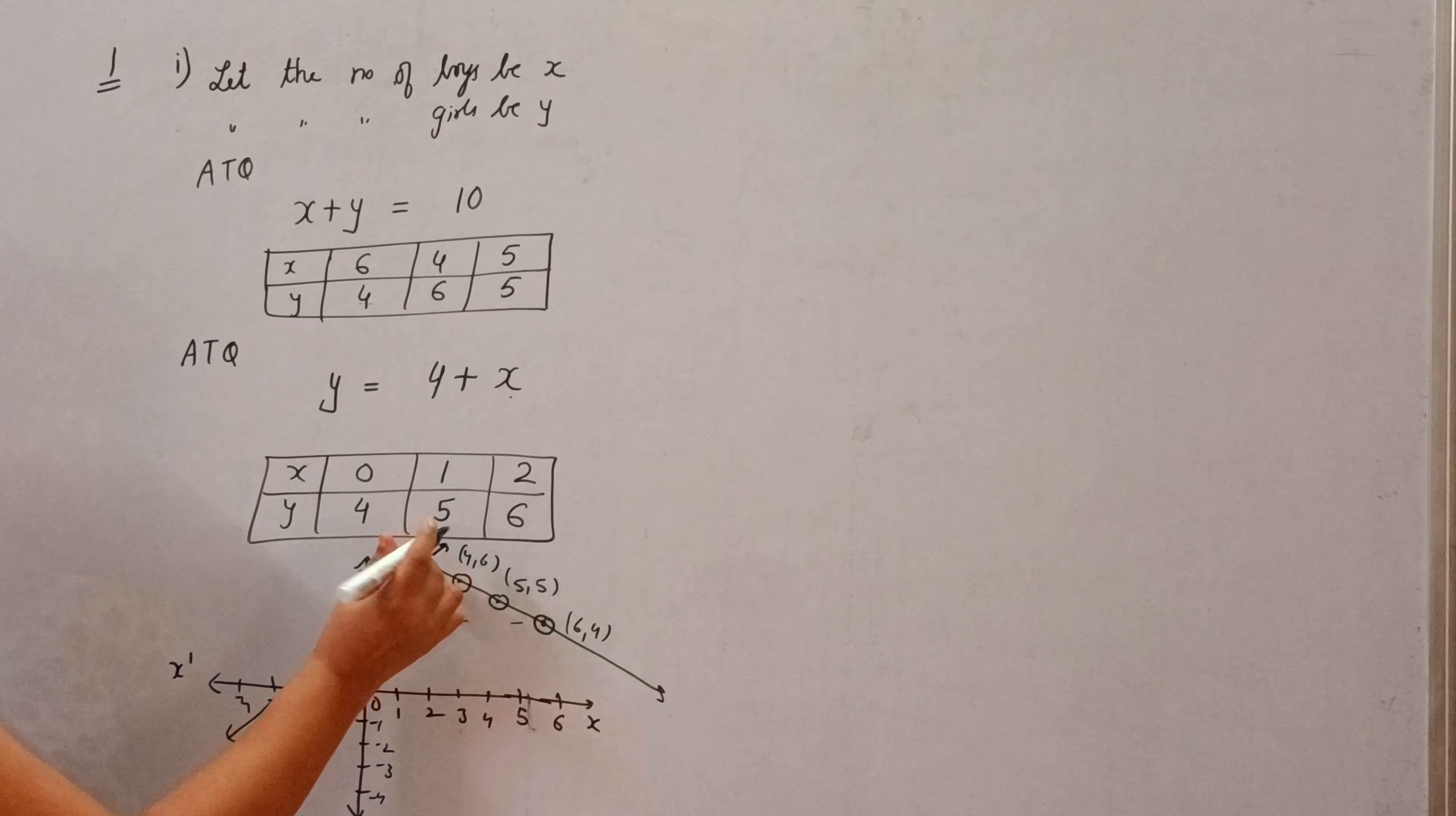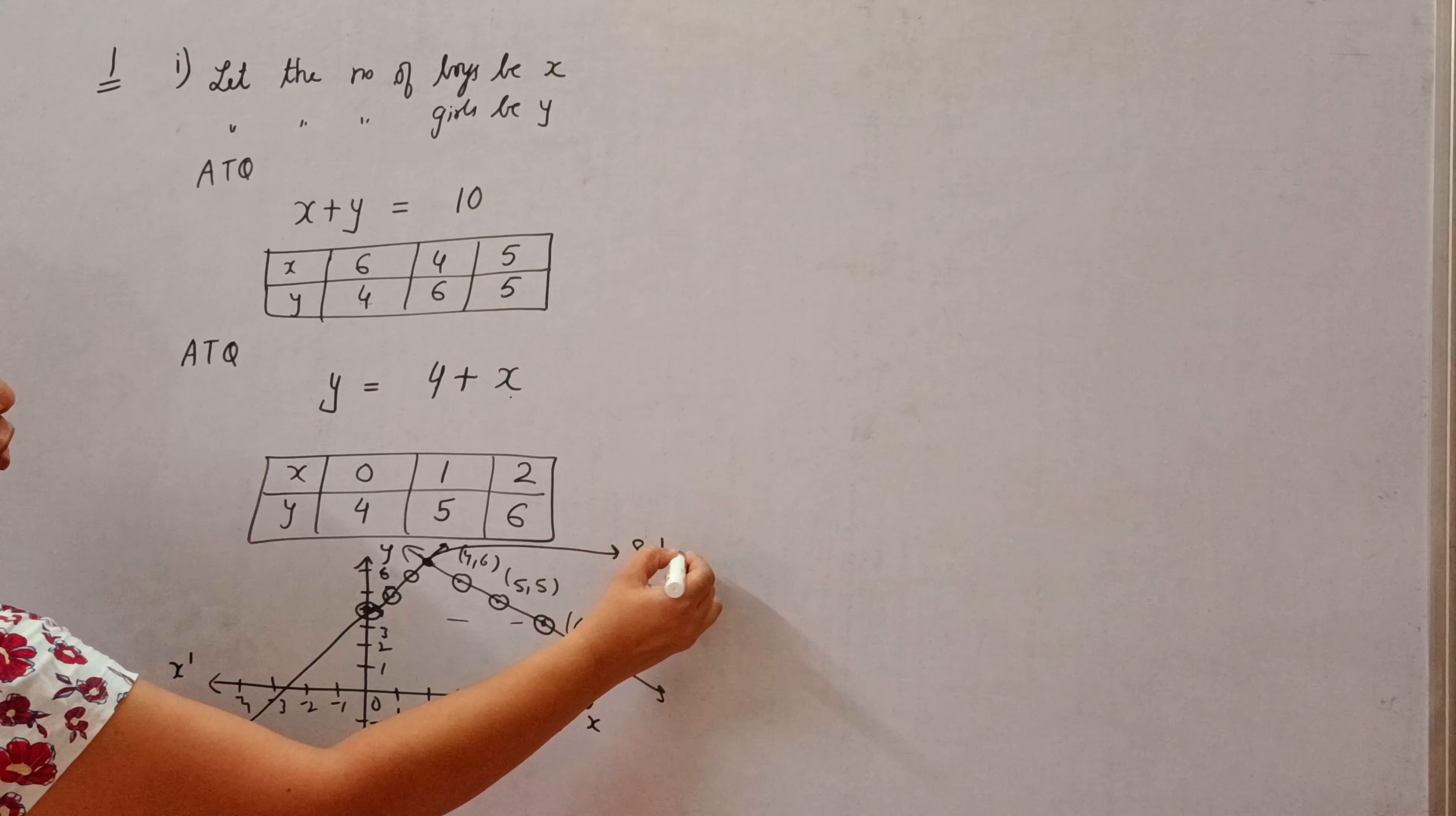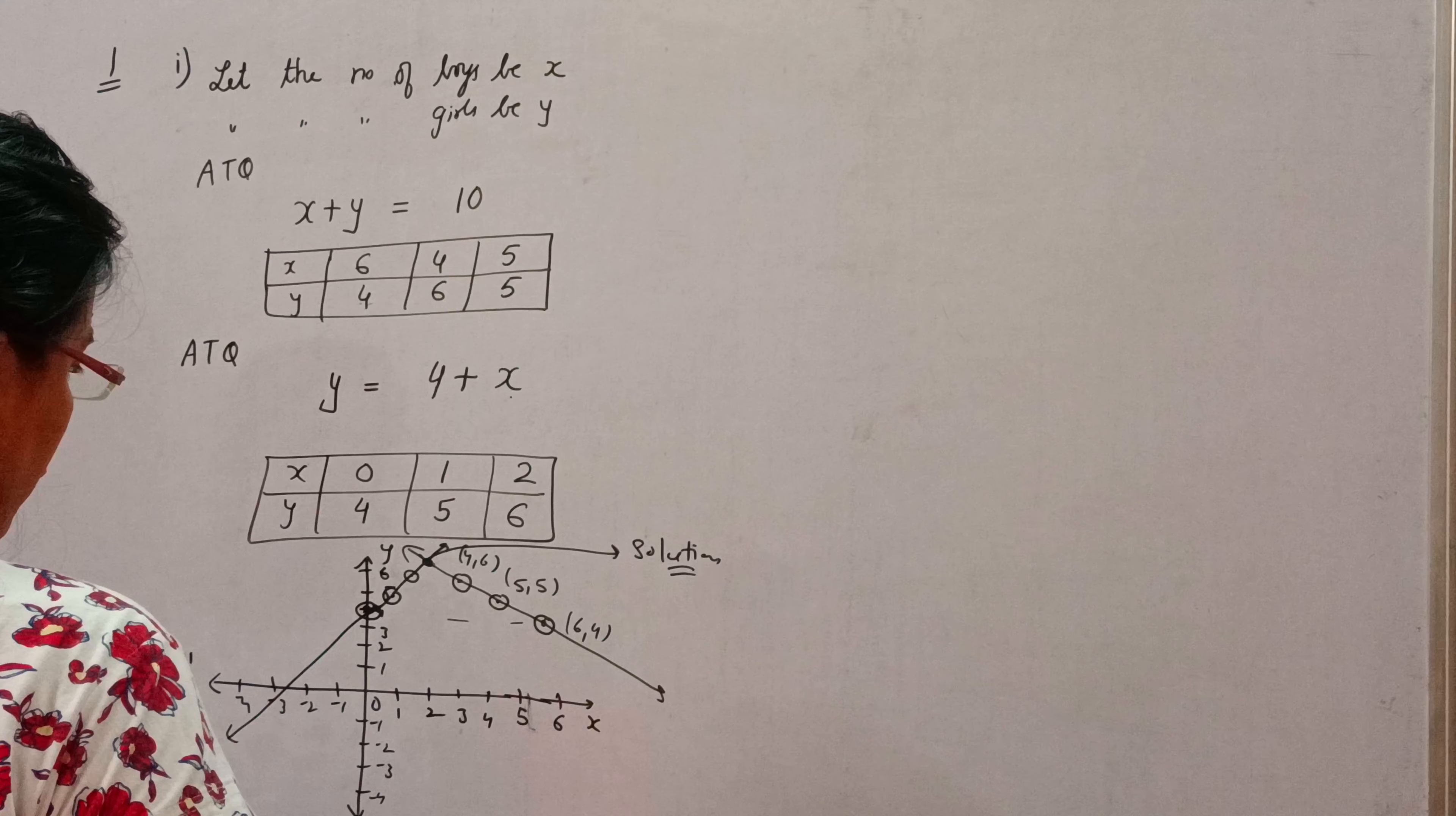Now, you can see these two lines are intersecting at this point. So, this point will be the solution of this question. We can find solution using this way. If you will draw this on the graph, then you will get the exact value.